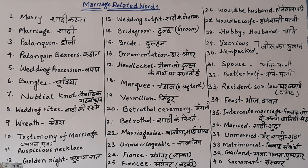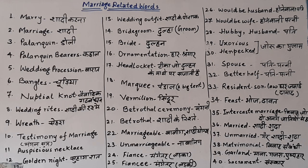The twenty-second word is 'marriageable,' which means 'shadi ke yogya' — of marriageable age, what we call 'balig.' For example: 'I have marriageable sisters, so I have a responsibility to earn my livelihood so that I can get them married.' The opposite is 'unmarriageable,' meaning 'nabalig' — one who is not yet of marriageable age. For example: 'I have two unmarriageable sisters and I teach them in good school.'